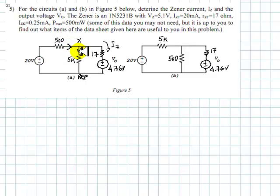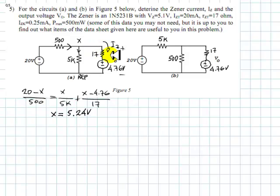And we use KCL. Simply KCL, the current going in is going to be 20 minus X divided by 500 ohms. And that's going to be equal to the current here, X over 5k, plus the current in the diode, which is X minus 4.76 divided by 17 ohms.